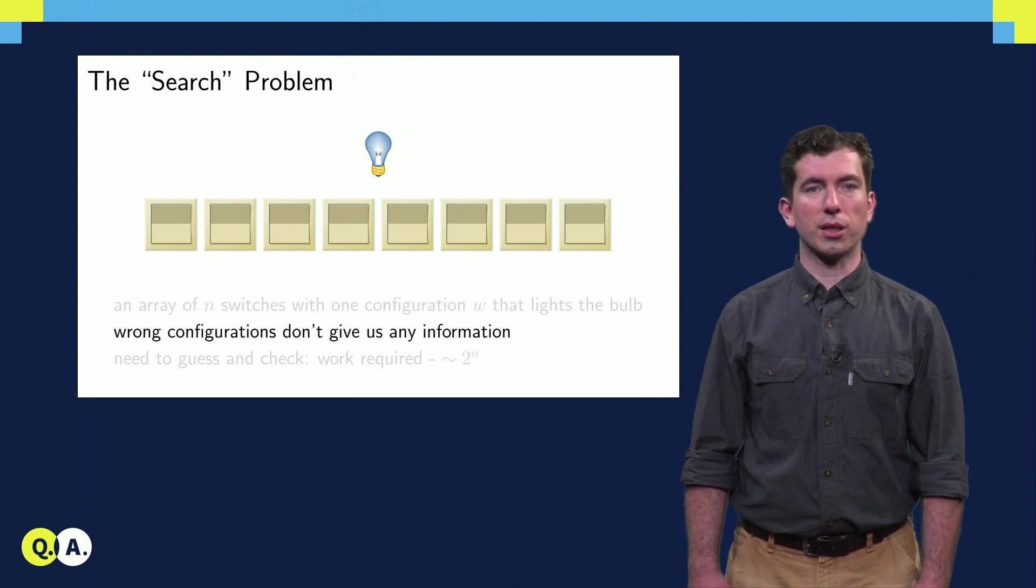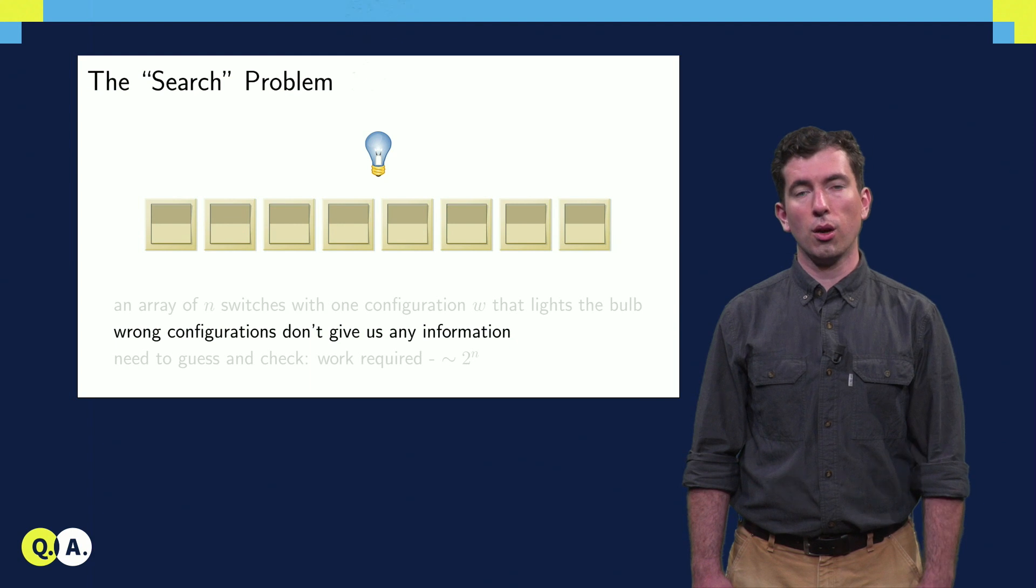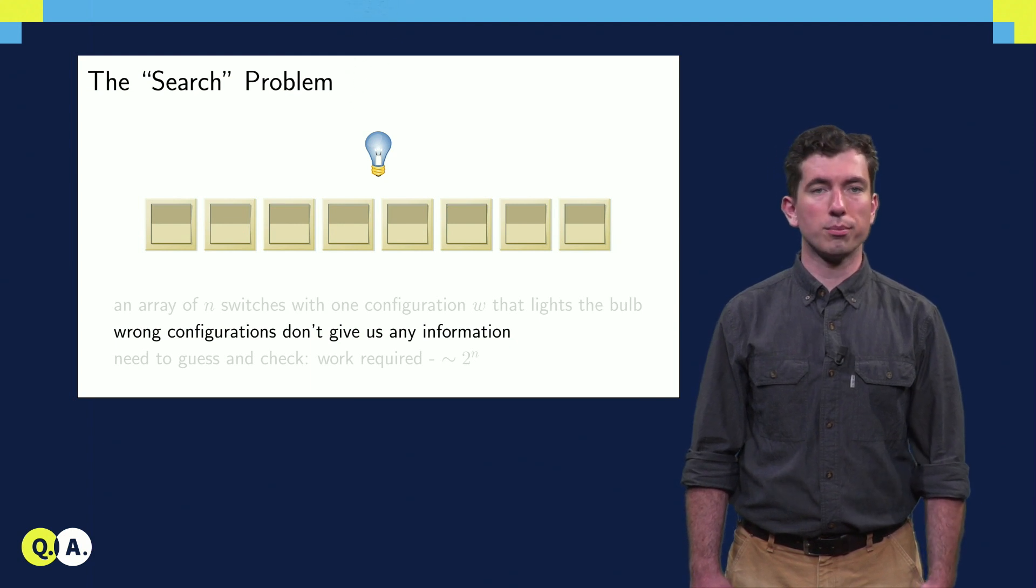If we tried a certain configuration of these switches, some up, some down, it wouldn't tell us anything about which of the switches were set incorrectly. All we would see is that the bulb is either lit or not.